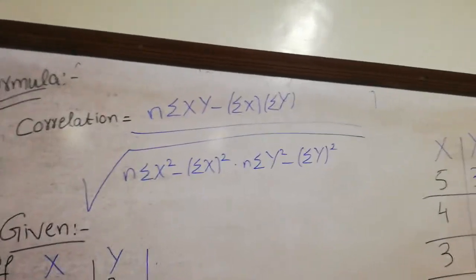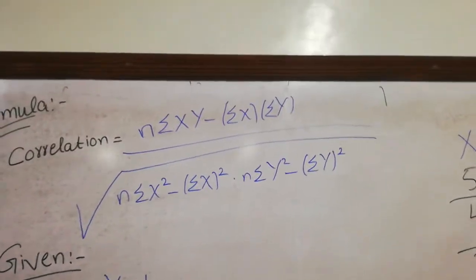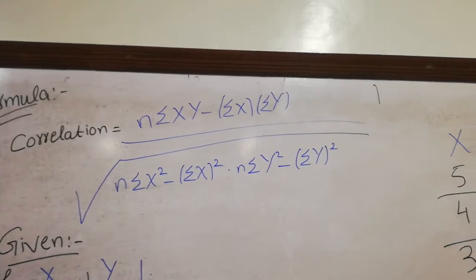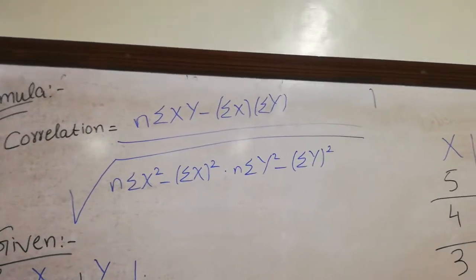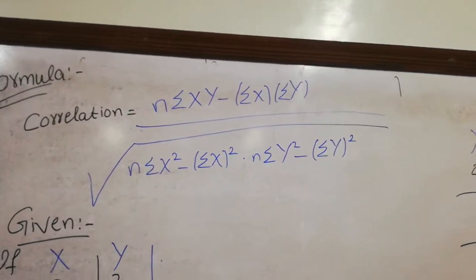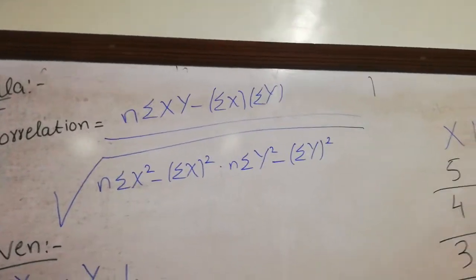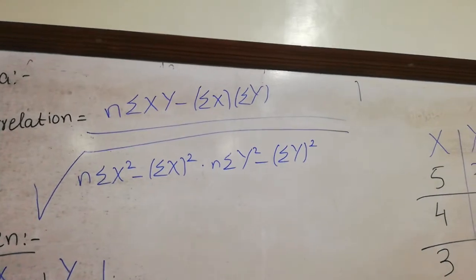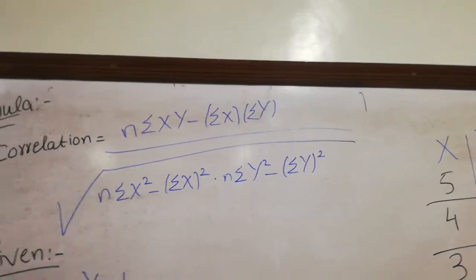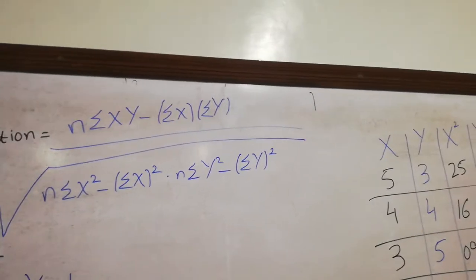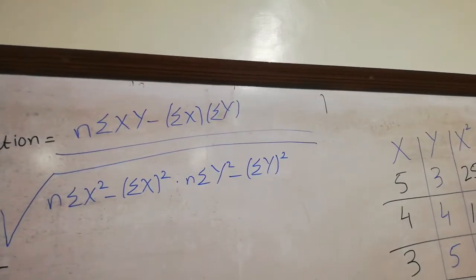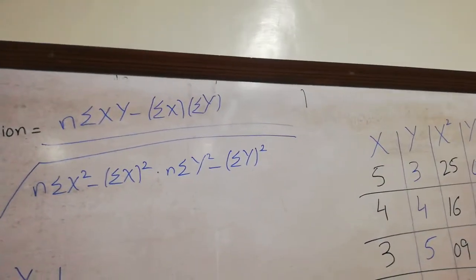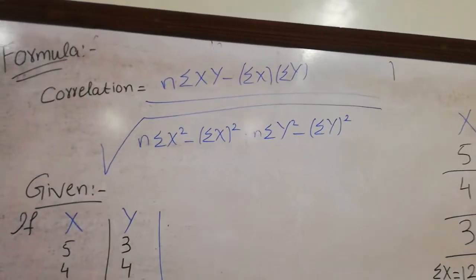Now let's go to the formula. You will find many formulae in correlation, but one of the simplest is: r equals n times summation XY, minus summation X times summation Y, divided by the square root of n times summation X-squared minus (summation X) squared, multiplied by n times summation Y-squared minus (summation Y) squared.